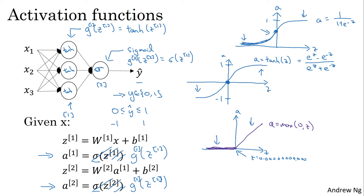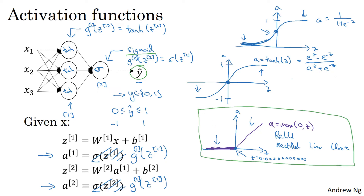In practice, you can pretend the derivative when z is equal to 0 is either 1 or 0, and your code will work just fine. Here are some rules of thumb for choosing activation functions: if your output is a 0 or 1 value and you're doing binary classification, then the sigmoid activation function is a natural choice for the output layer. For all other units, the ReLU, or Rectified Linear Unit, is increasingly the default choice. If you're not sure what to use for your hidden layer, I would just use the ReLU activation function. It's what you see most people using these days, although sometimes people also use the tanh activation function.